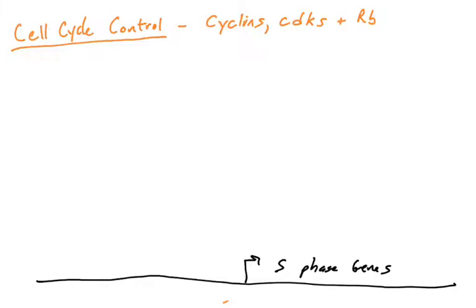In this video we're going to talk about cell cycle control, specifically the role of cyclin D and cyclin E in controlling the RB or retinoblastoma protein, allowing the cell to progress from G1 phase into S phase.